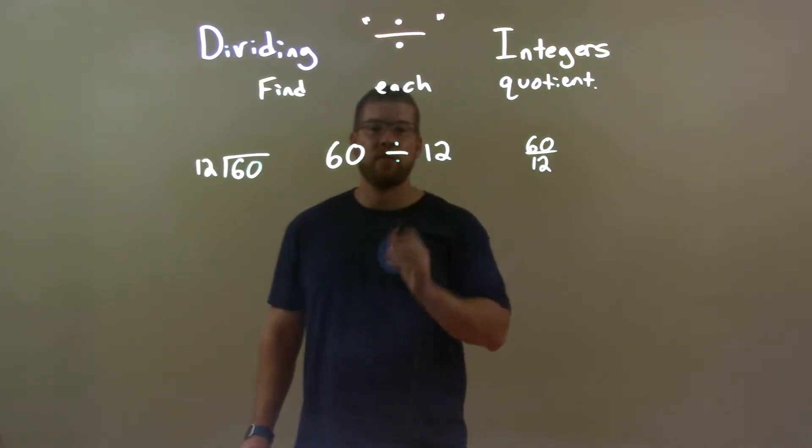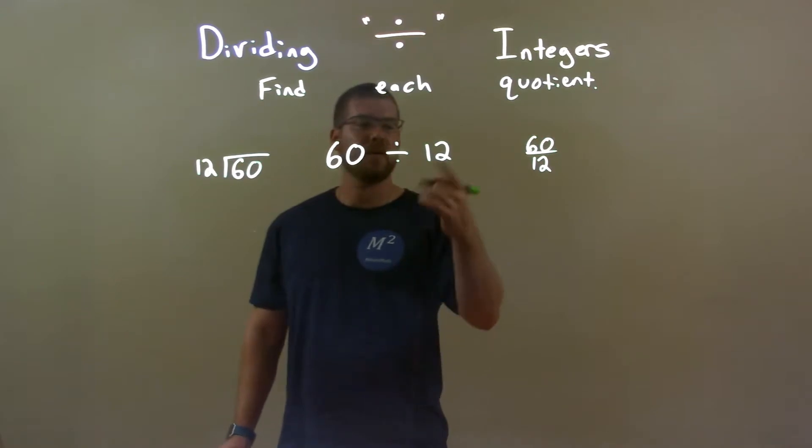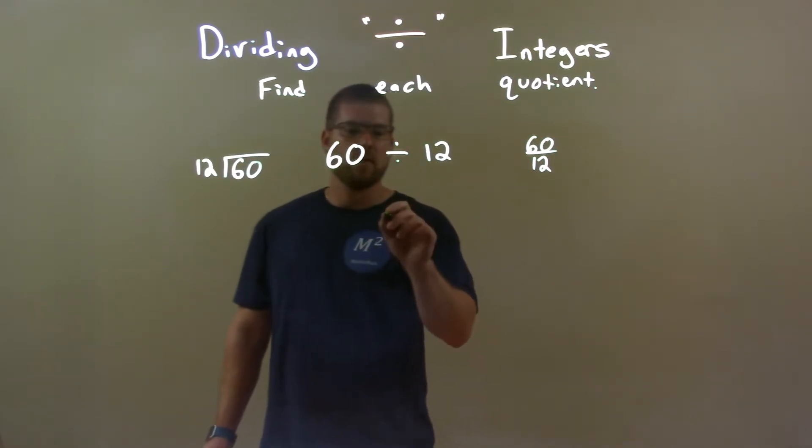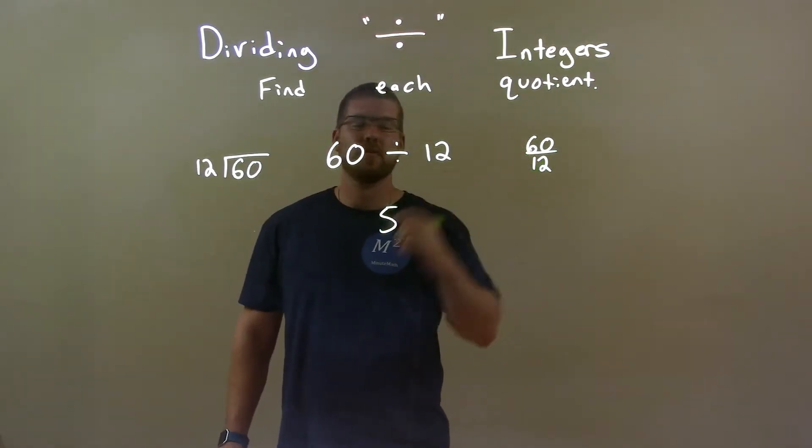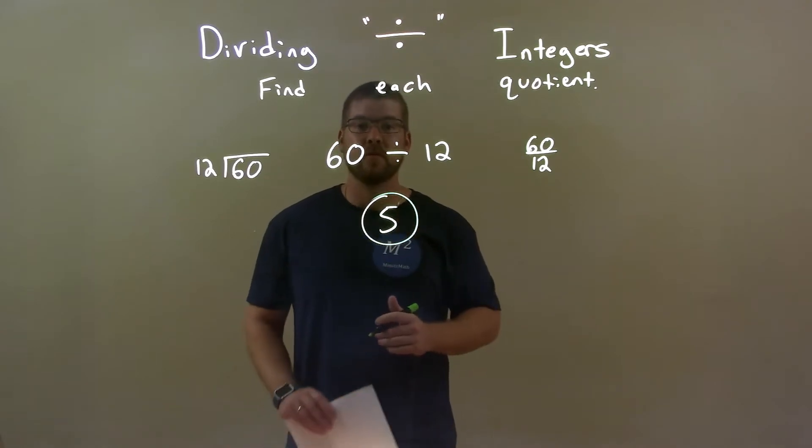That answer is going to be 5, right? 5 times 10 is 50 and 5 times 2 is 10, and 10 plus 50 is 60. So 5 is just our answer here. And we know it's a positive divided by a positive, which is a positive. So our final answer is just 5.